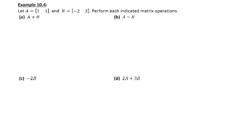Example 10.4 is going to give us two matrices. It defines A and we're also going to define a B, and each one of these matrices is a one by two matrix. There's one row with two columns and it says perform each indicated matrix operation.